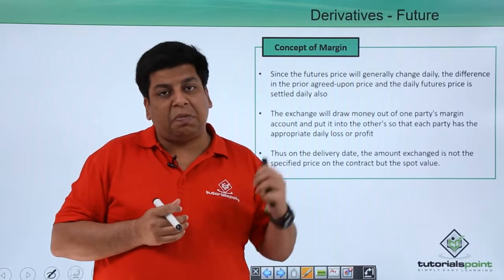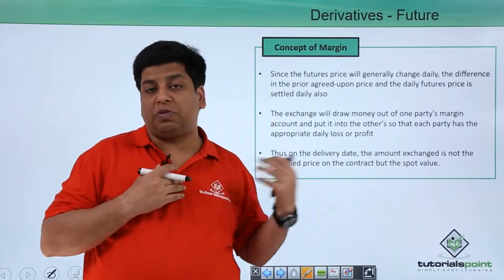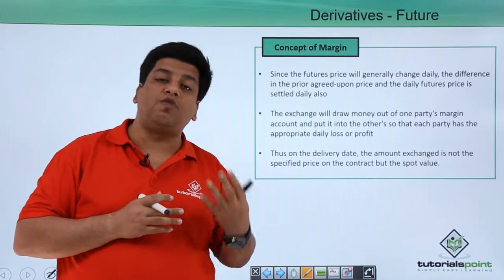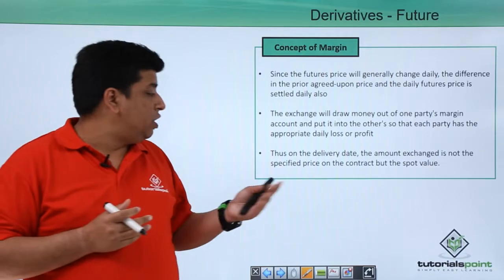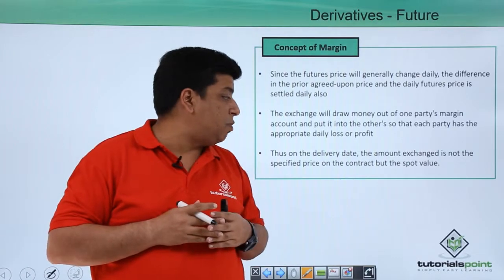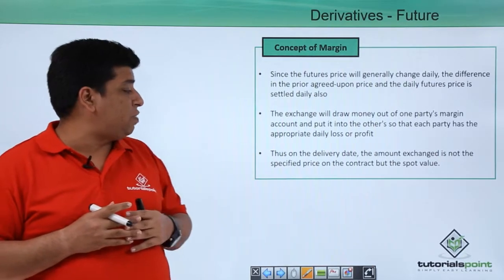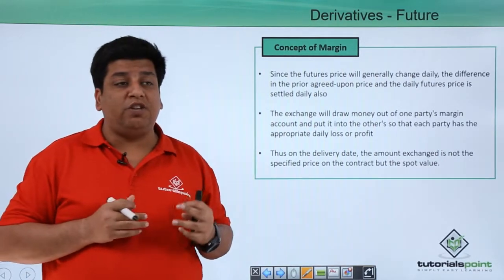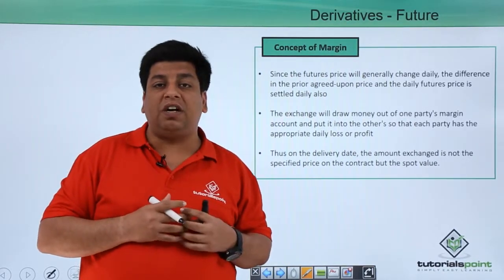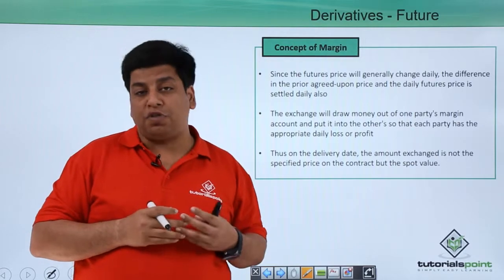For example, if the price goes up from my pre-agreed price, money will be taken from my account and credited to the counterparty's account, and so on. Thus, on the delivery date, the amount exchanged is not the specified price on the contract but the spot value. When the delivery date comes, it is the spot value — since the previous price changes from the pre-agreed price have already been covered through the concept of margining.